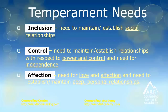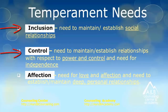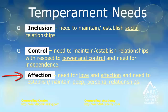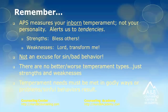This model looks at a person's needs in three distinct areas. One is the need for inclusion — the need to maintain and establish social relationships. The second area is control: how dependent are they on other people, are they independent, do they like to be in charge? And the third need is the need for affection — our need for love and our need to maintain and establish deep personal relationships.